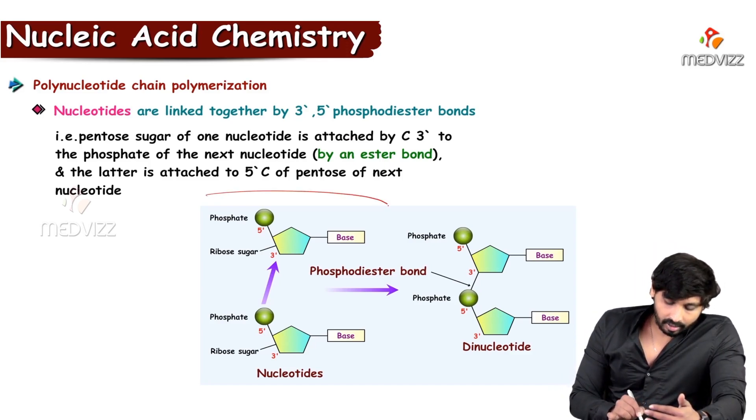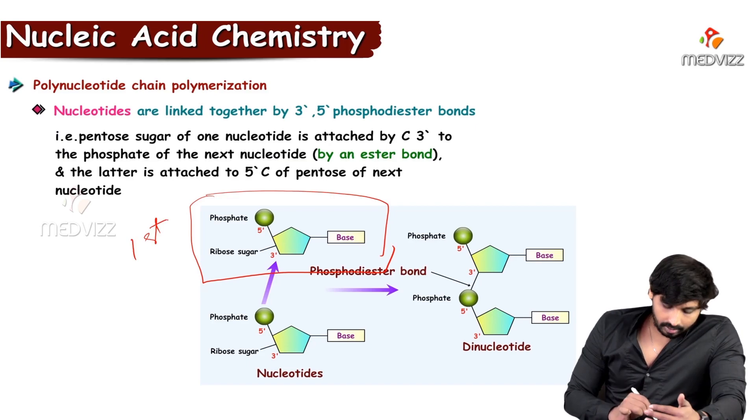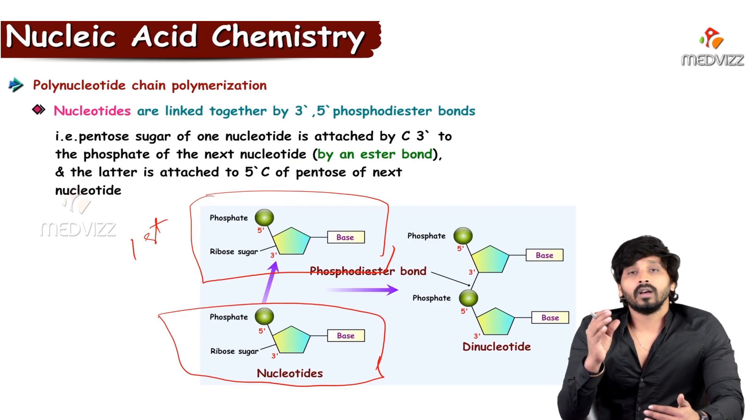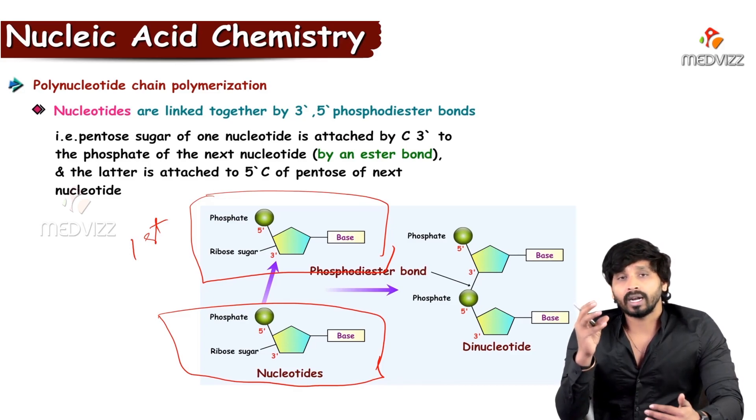This is the base. This is the first nucleotide, and this is the second nucleotide. As we are all aware, to the sugar molecule, base is attached at the first carbon and phosphate group attached at the fifth carbon. And third carbon of sugar is free, OH group is there.